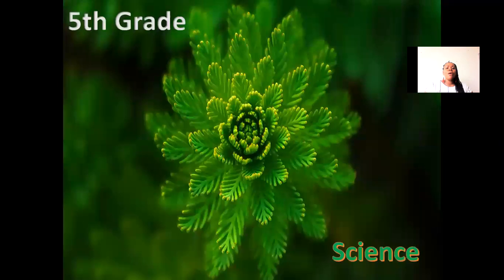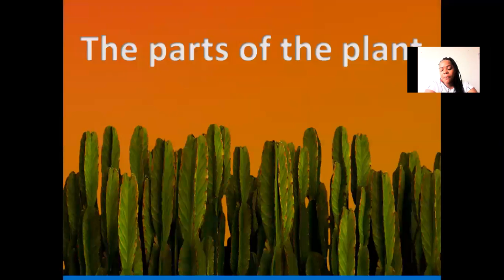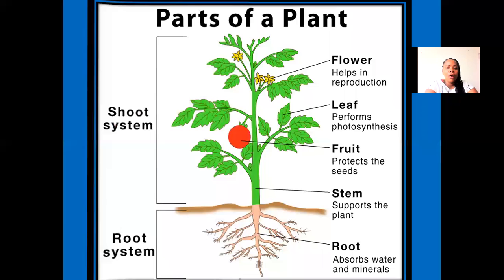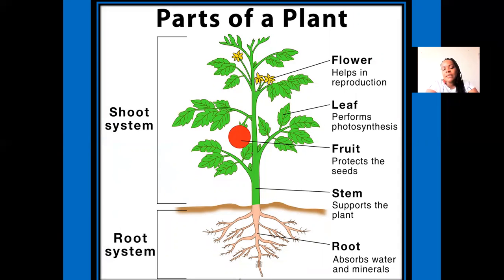And now we are going to talk about, in science, the parts of the plant. Okay, guys, the parts of the plant are: flowers — the flowers help in reproduction. We have the leaf, the stem, and photosynthesis. Fruit protects the seeds, and the stem supports the plant, and roots absorb water and minerals.